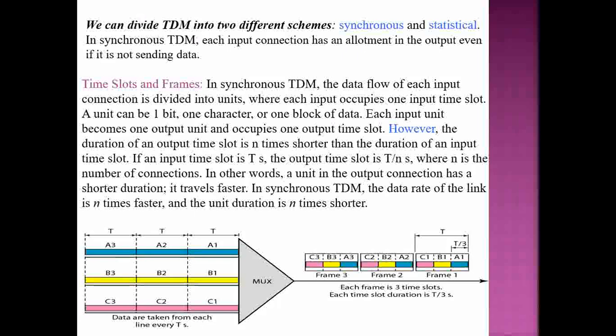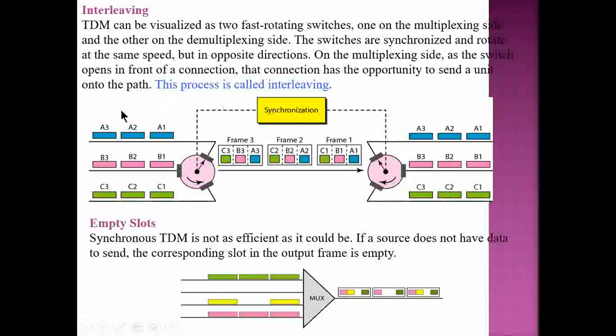When channels are given different time slots going in, they are a bit slow because they are sharing with time differences. When they come out, they are faster. This process is called interleaving, which explains what synchronization is about — agreement in order.